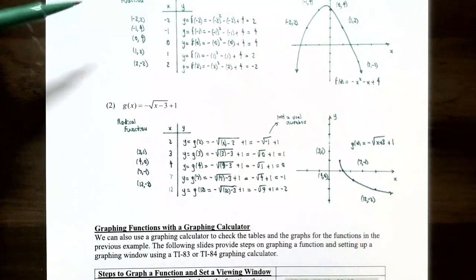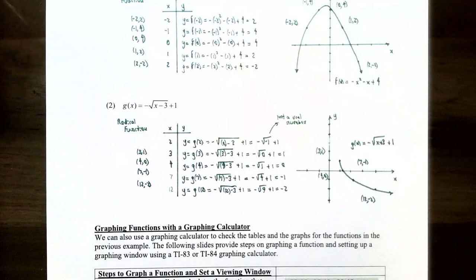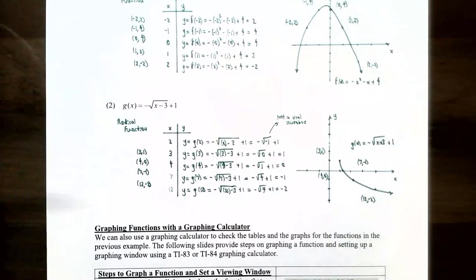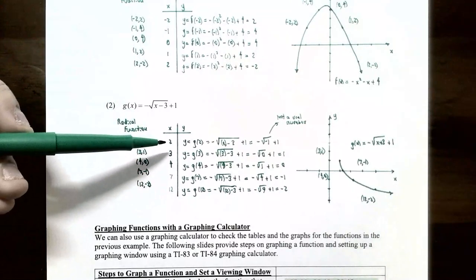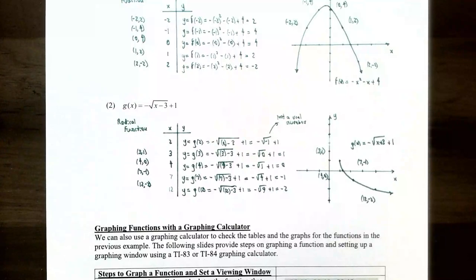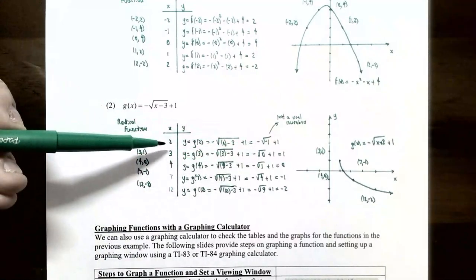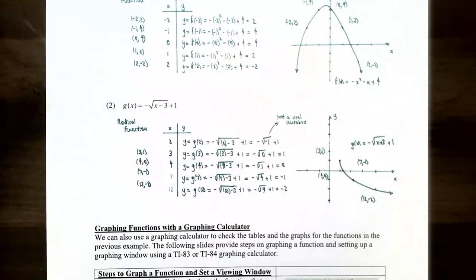For number 2, g(x) = -√(x - 3) + 1. This is a radical function because it involves a radical of a variable. Choosing x = 2, 3, 4, 7, and 12: when x = 2, we get √(2-3) = √(-1), which is not a real number, so x = 2 is not in the domain of g. When x = 3, the output is 1, giving the point (3, 1).